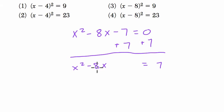So to complete the square, I take the term next to the x, the coefficient, which is 8, and I divide it by 2 and I square it. So I have negative 8 divided by 2 is negative 4, and then negative 4 squared is 16.